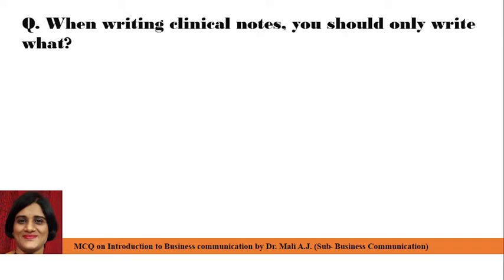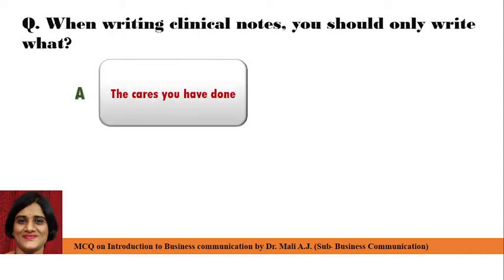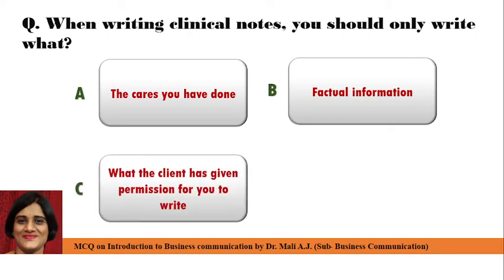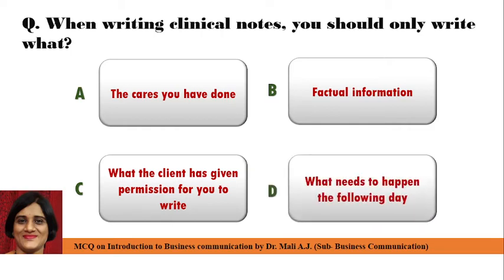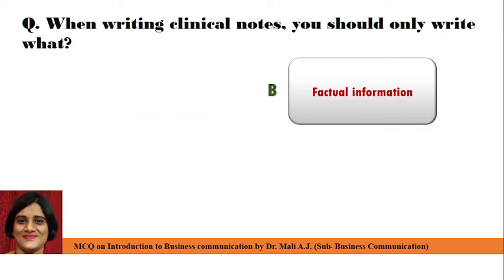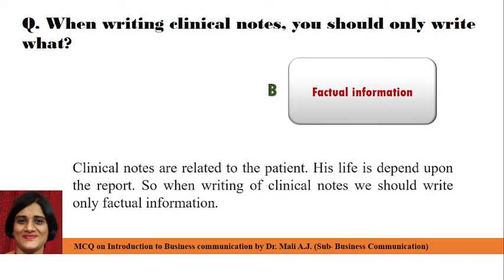Next question: When writing clinical notes, you should only write what? Point A: The cares you have done. Point B: Actual information. Correct answer is Point B: Actual information. Actual information should be written in clinical notes because clinical notes are related to the patient — his life depends upon the report. So when writing clinical notes, we should write only factual information.